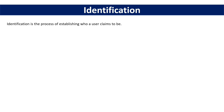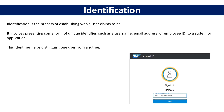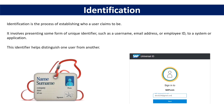Identification is the process of establishing who a user claims to be. It involves presenting some form of a unique identifier such as a username, email address, or employee ID to a system or application. This unique identifier helps in distinguishing one user from another. For example, when you create an account on a website and enter your email address as your username, you are providing your identification.